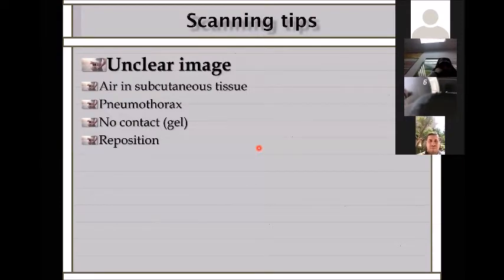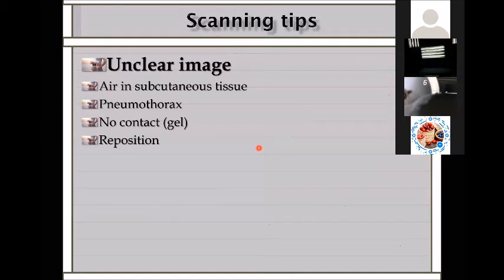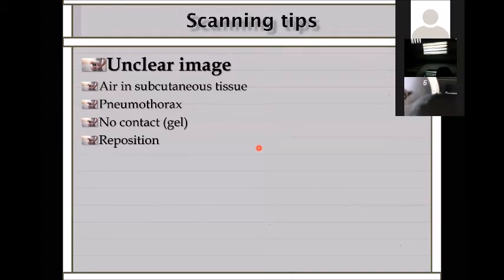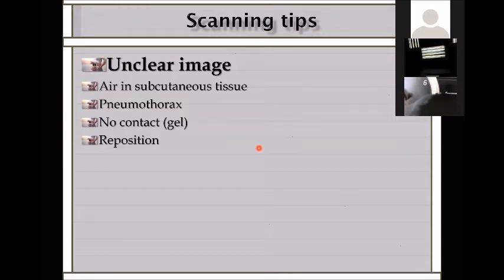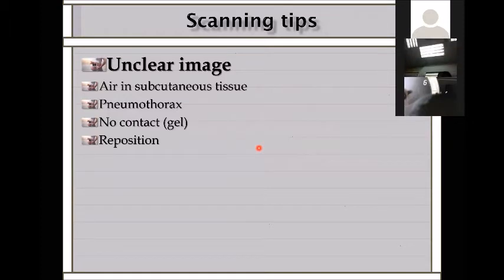When you start scanning and you don't see anything, basically there is air—and as all of you know, air is the enemy of ultrasound. So if you don't see, either there is air in the subcutaneous tissue, pneumothorax, or there is air outside the body because there is no gel. You need to put gel, check how you're scanning, and reposition.